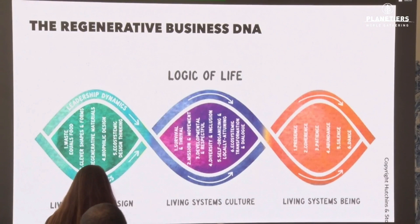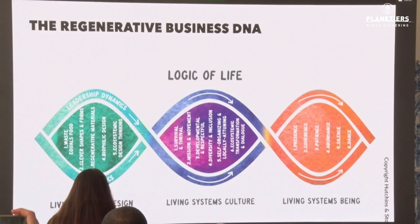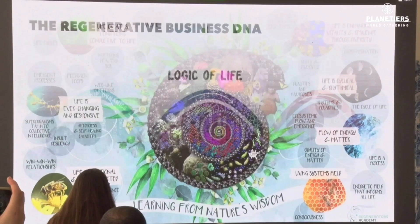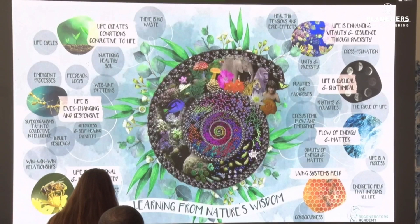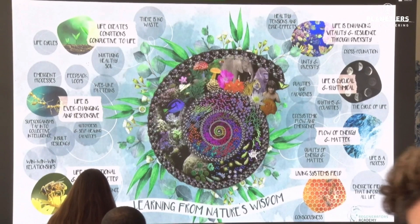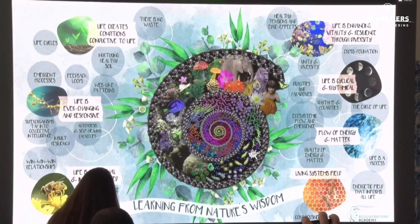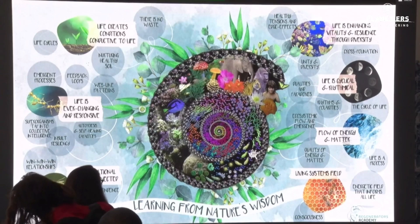I will talk you through the three main components of the regenerative business and leadership DNA. It consists of: living systems design — how do we produce our products and services; living systems culture — how do we create thriving, abundant cultures within our organizations, communities, and societies; and living system being qualities — what capacities do we need to nurture within to hold space for the emergence of this new paradigm. Everything in the regenerative era is based on what we call the logic of life. John works with the eight principles of a regenerative economy; the Biomimicry Institute works with life's design principles. We have these seven principles that are the essence of how life continuously creates conditions for more life to thrive.